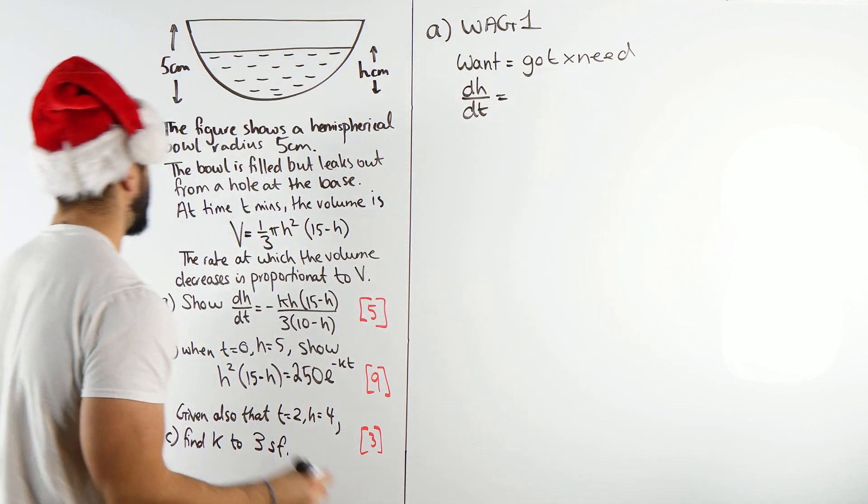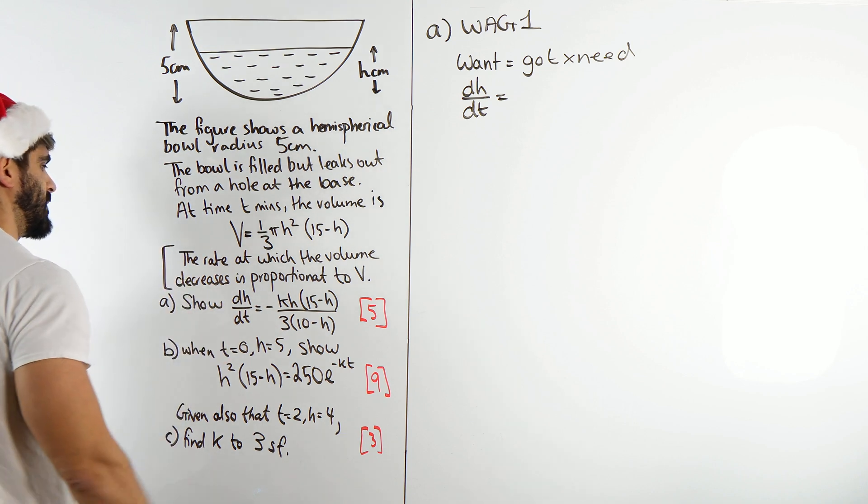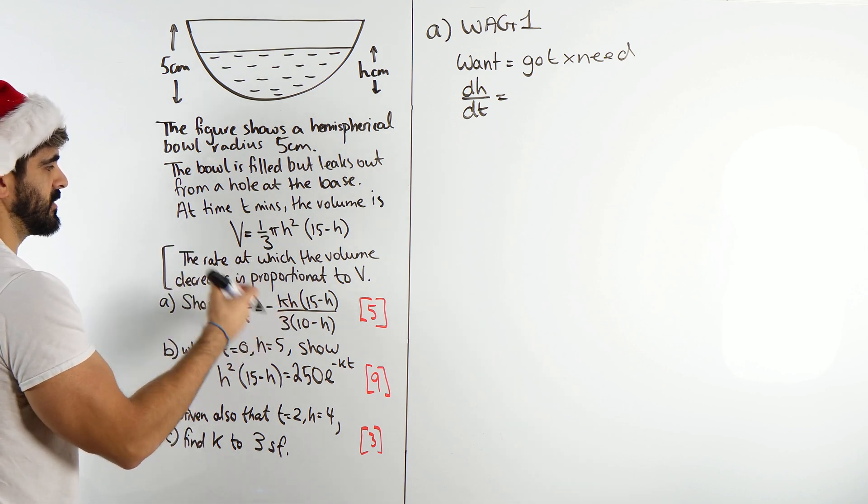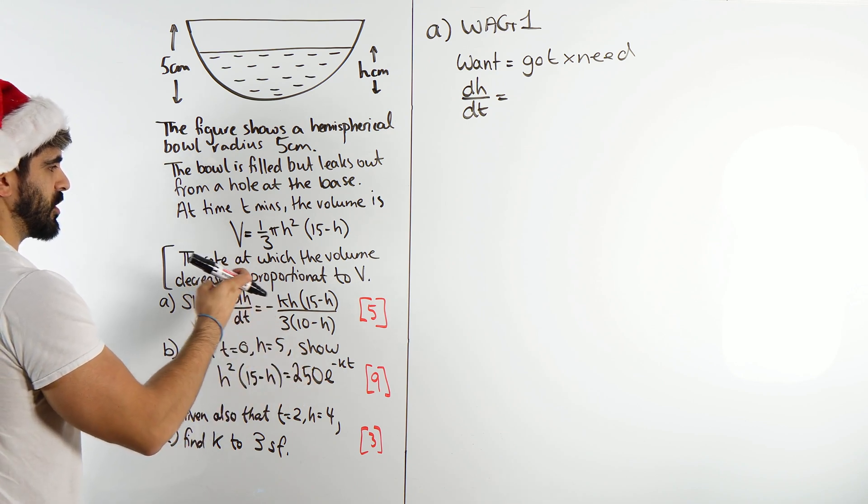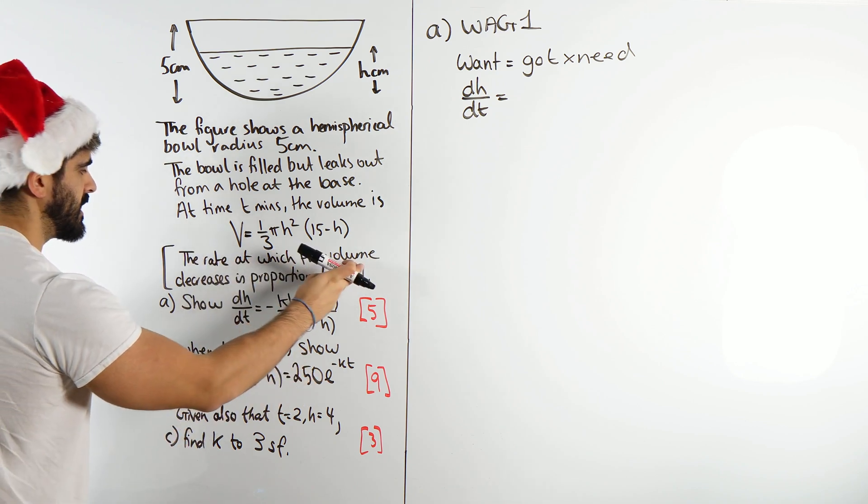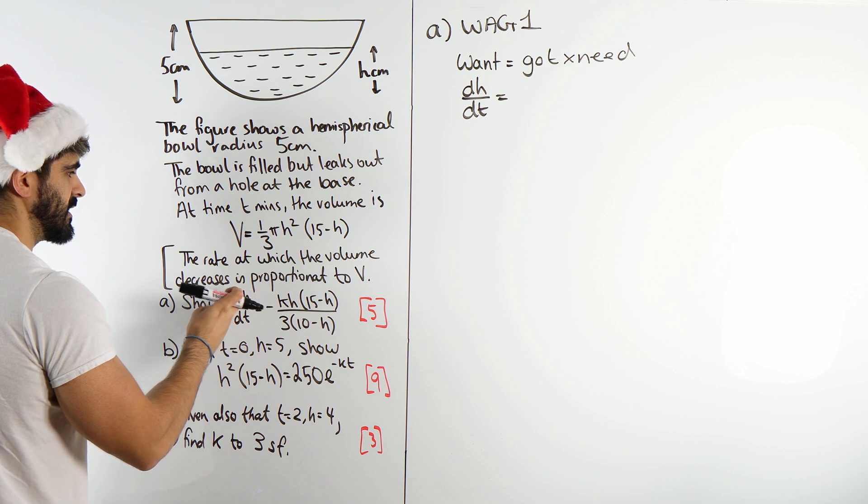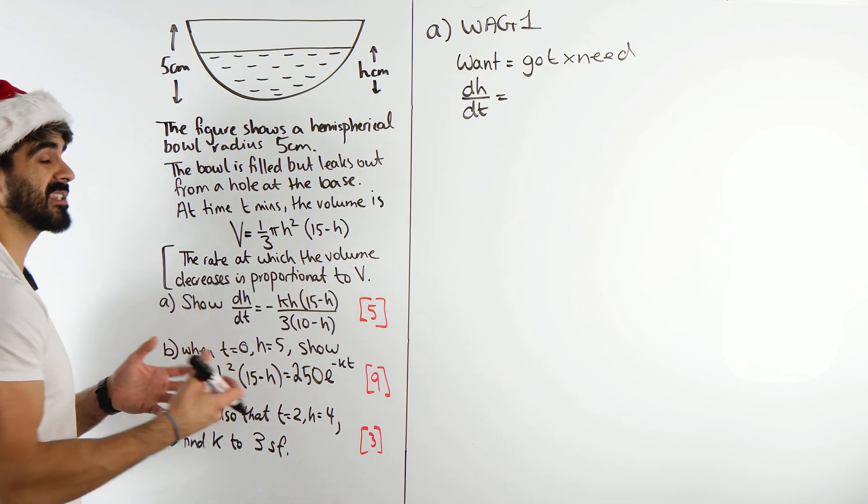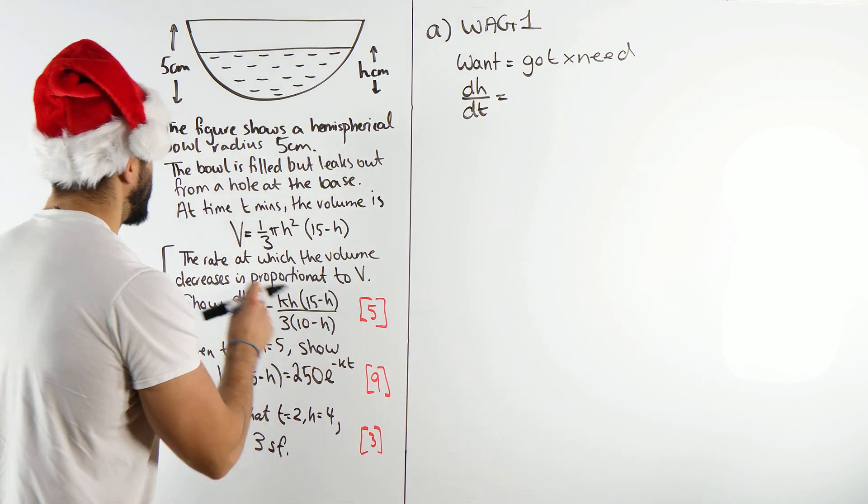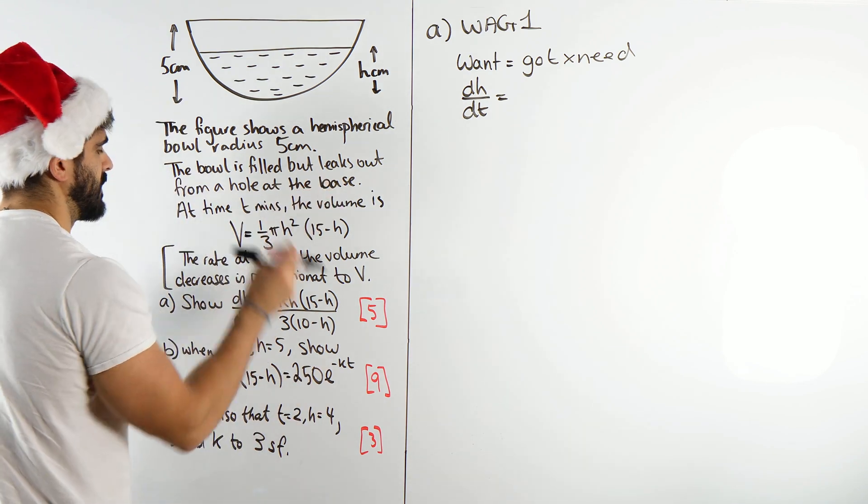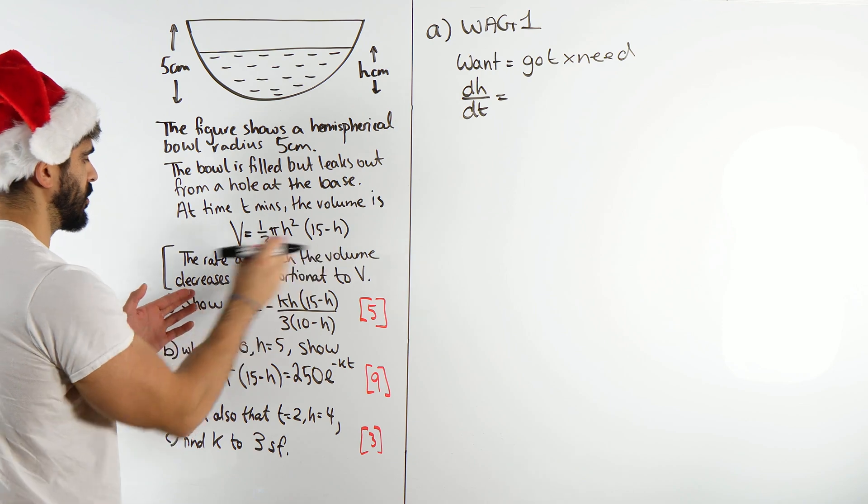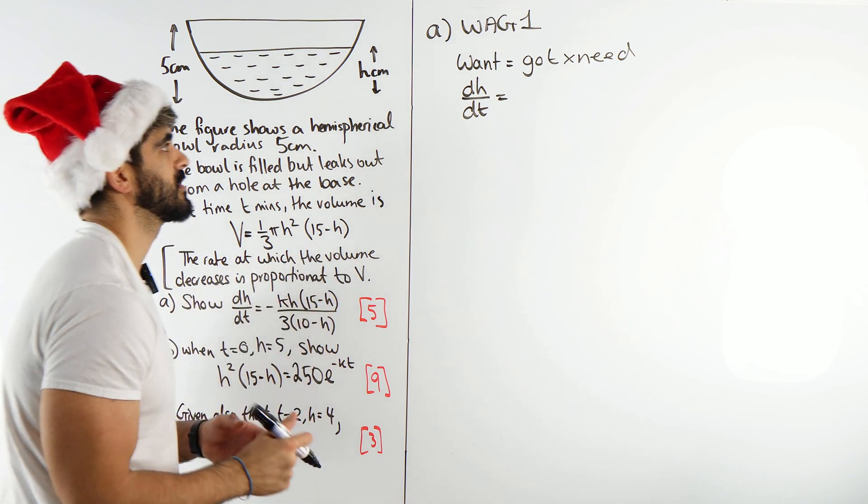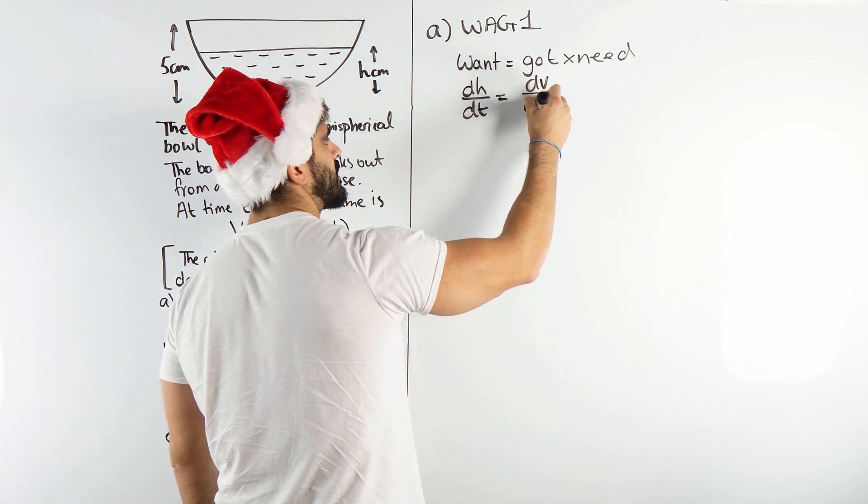What have we got? Well, the question very clearly says here something about the rates. The rate, so that's a change in value, at which the volume, so DV decreases, is proportional to V. So, rate with respect to time will 99% be the case because they talked about time over here. So the rate at which the volume decreases, so dV by dT is proportional to V. So we've got dV by dT, we'll write that down in a second.